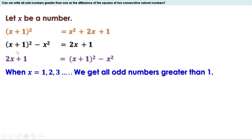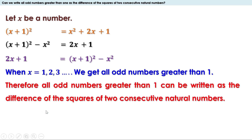Therefore all odd numbers greater than 1 can be expressed as the difference of the squares of two consecutive natural numbers.